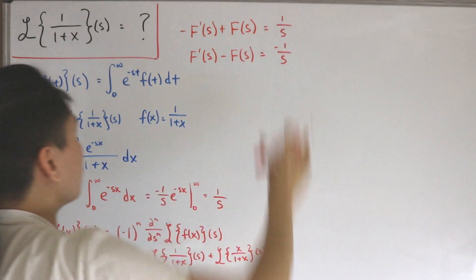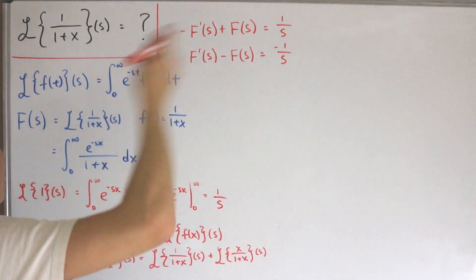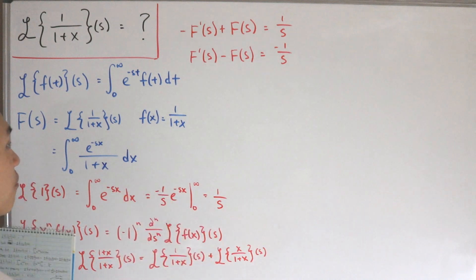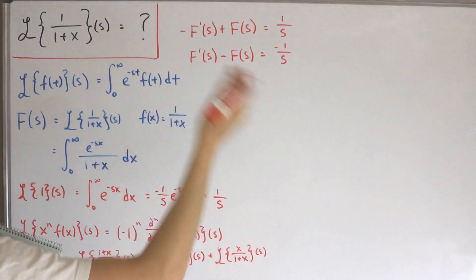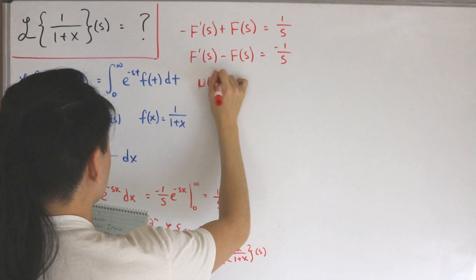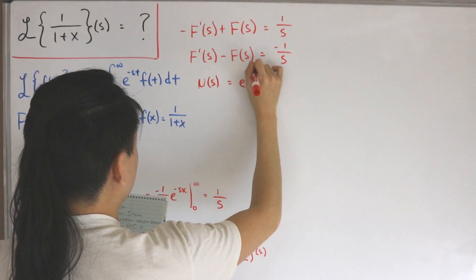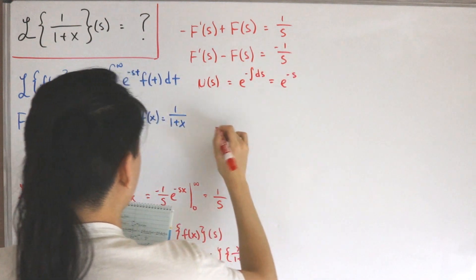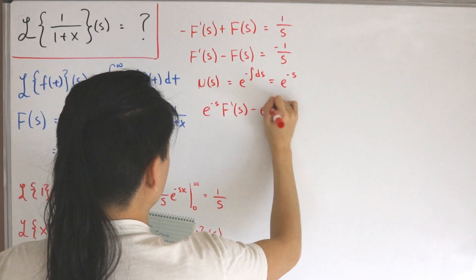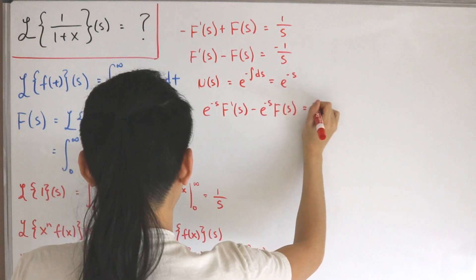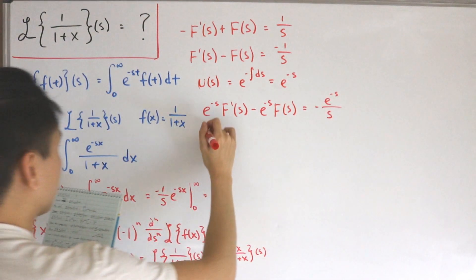This is now in the form of a first-order linear ODE for the unknown function F(s). We need to find an integrating factor, multiply both sides, and then undo that to work backwards through the product rule. The integrating factor is e to the power of negative the integral of negative one ds, which equals e to the power negative s.